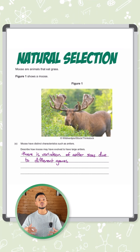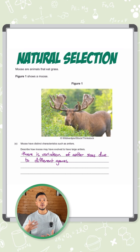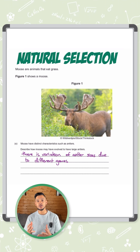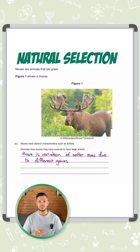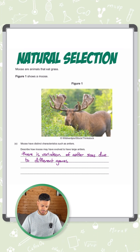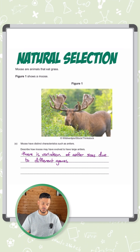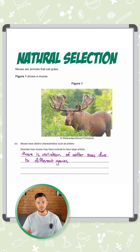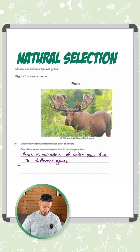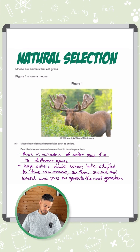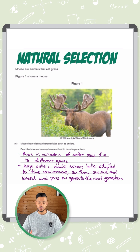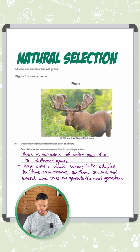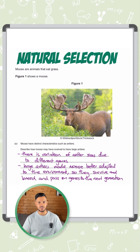Whichever one is more suited to the environment will be more likely to survive, breed, and pass on those characteristics to its offspring. Because this question says moose have evolved to have large antlers, that must mean that is the advantageous characteristic. So large antlers made the moose better adapted to the environment, so they survive and breed and pass on those genes to the next generation.